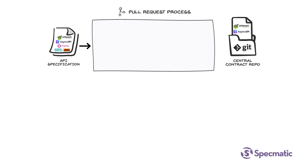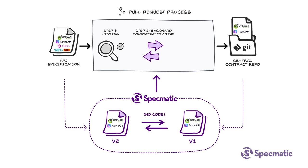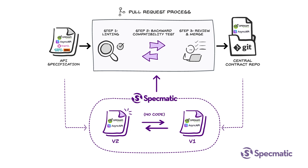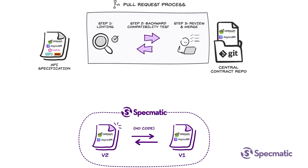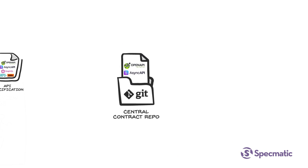To update a spec, we go through a pull request process. Step 1: we do linting to make sure that the specifications are as per the standards. Step 2: we do a compatibility test to make sure we are not accidentally breaking backward compatibility. Step 3: we review and merge the updated spec in the repo. This will ensure the central contract repo always stays up to date.